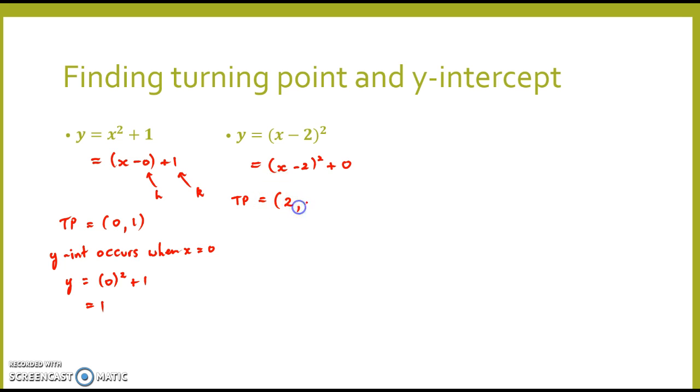And I haven't gone up or down anywhere. So my turning point's now at that point, 2 comma 0. The y-intercept, again, it occurs when x equals 0. And so y will equal 0 minus 2 all squared, which will be negative 2 all squared, which will be 4.